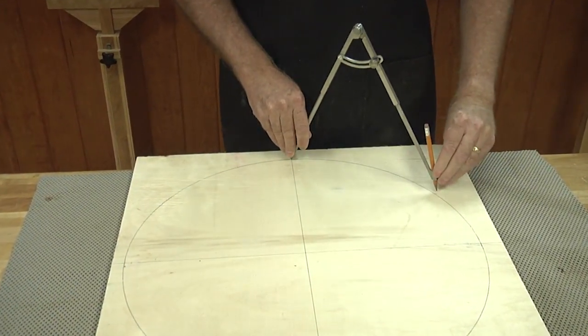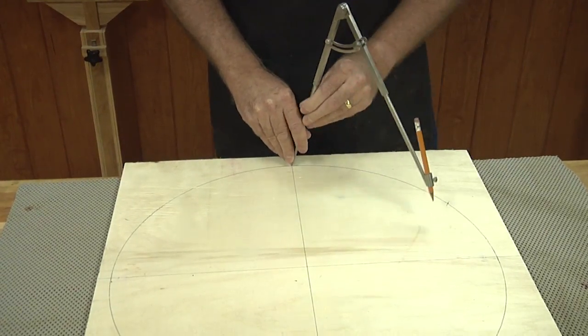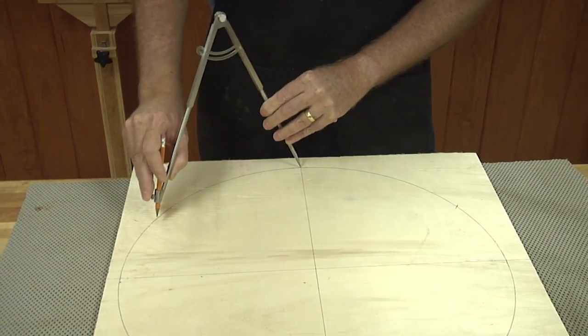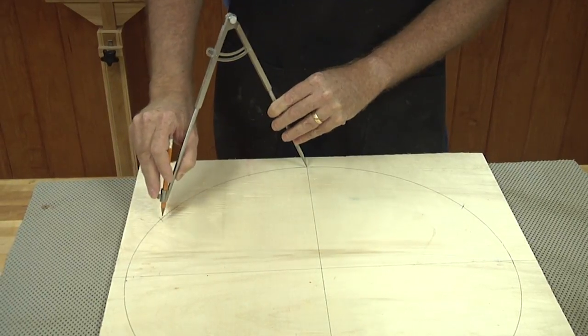Go up here, and where it intersects, just make a little mark. That'll be your 2, and now swing over this way, and that'll be the 10.